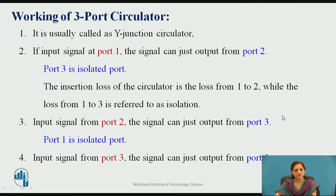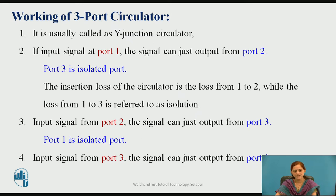If the input signal is applied to port 1, the signal comes out of port 2, while port 3 is isolated from port 1. The insertion loss of the circulator is the loss from port 1 to port 2, while the loss from port 1 to port 3 is referred to as the isolation, defined in decibel value. When input is at port 2, the signal outputs from port 3 and port 1 is the isolated port. When input is at port 3, the signal outputs from port 1.